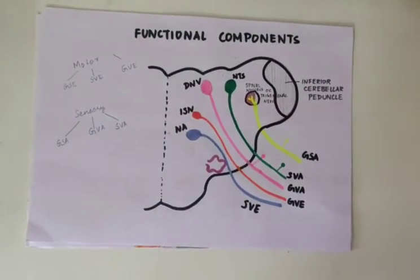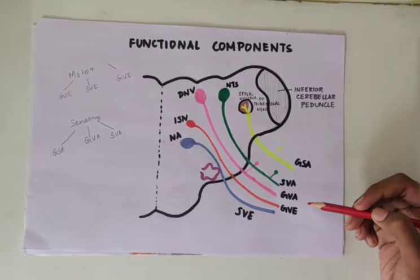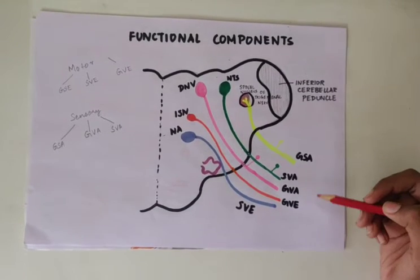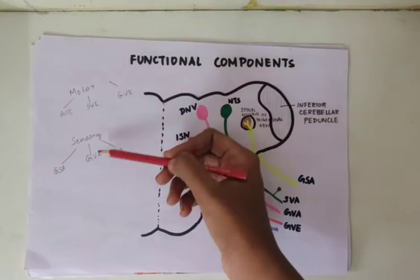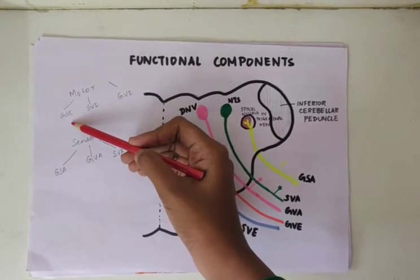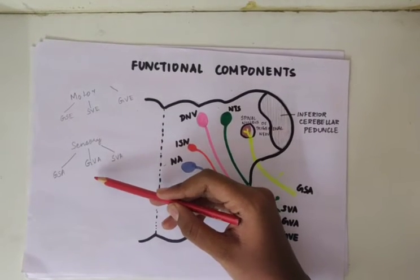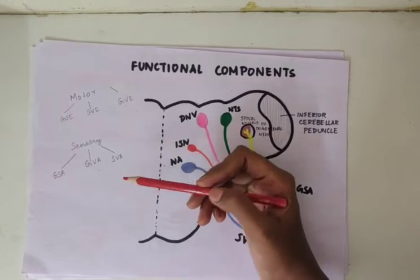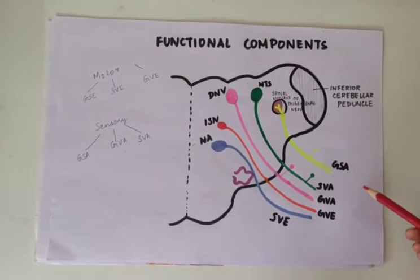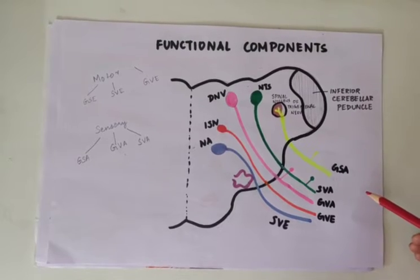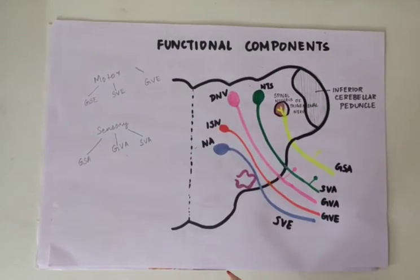Now we will see the functional components of the glossopharyngeal nerve. Before going into detail, let's review the functional components of a cranial nerve in general. With any cranial nerve, there is either motor or sensory. Motor includes GSE (general somatic efferent), SVE (special visceral efferent), and GVE (general visceral efferent). Sensory includes GSA (general somatic afferent), GVA (general visceral afferent), and SVA (special visceral afferent). I'm not going into detail about each component as that was covered in the trigeminal nerve.